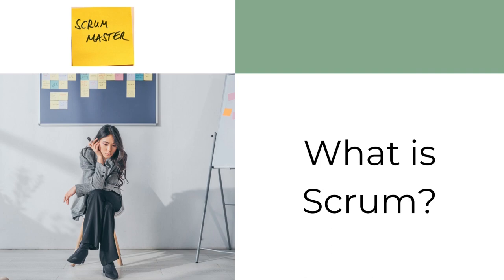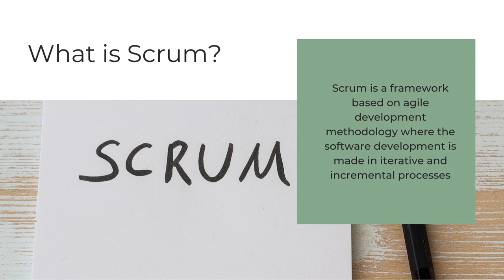Let us get started with a quick understanding of what Scrum is. Scrum is a framework based on Agile development methodology where software development is made in iterative and incremental processes. It is an Agile framework that is flexible, fast, and helps deliver customer expectations on time. The prime goal of the Scrum framework is to satisfy the customer's requirements with effective communication, transparency, and continuous progress. The most complex development processes that take a long time can be easily managed with the Scrum framework. Also, Scrum teams are self-organized and can adapt to changes as per the requirements.